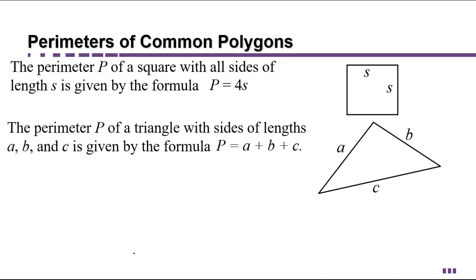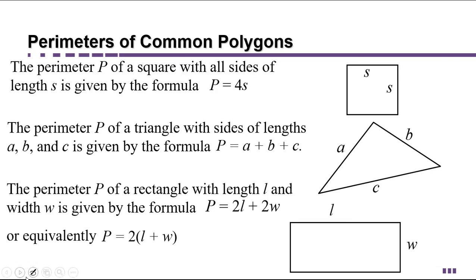The perimeter of a triangle with sides of lengths a, b, and c is just the sum p equals a plus b plus c. And the perimeter of a rectangle that has length l and width w is given by the formula p equals 2l plus 2w, because two sides have length l and two sides have length w.